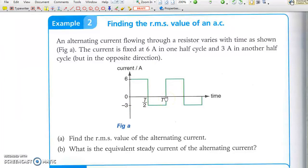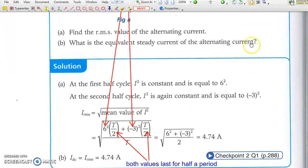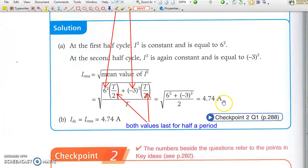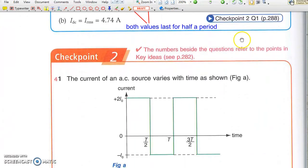Now calculate the squares of current. Then find the average value of the squares of current. The equivalent steady current is called root mean square current, which is the square root of the average of the squares of current. Do check point 2 below.